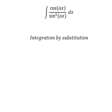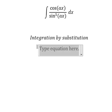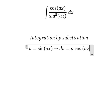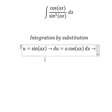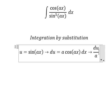So I will put u equal to sine ax. Later, we need to do the derivative for both sides, and we have du equals a cosine ax dx. Because we don't have a here, we need to divide both sides by a.